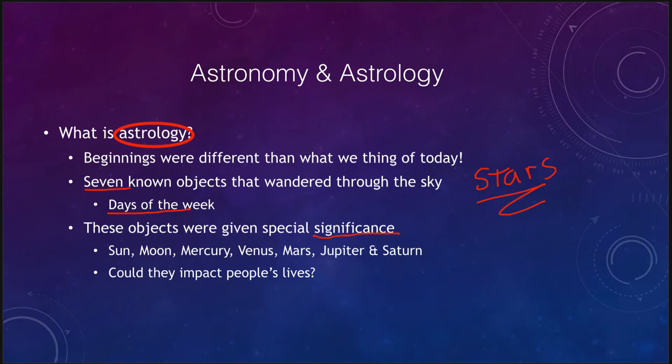They had special importance and special significance to ancient peoples. The beginnings of astrology were quite different than what we look at today. It was thought that these wandering objects could have an impact on people's lives — affecting how people's lives worked and making predictions of what would happen based on the positioning of the stars.